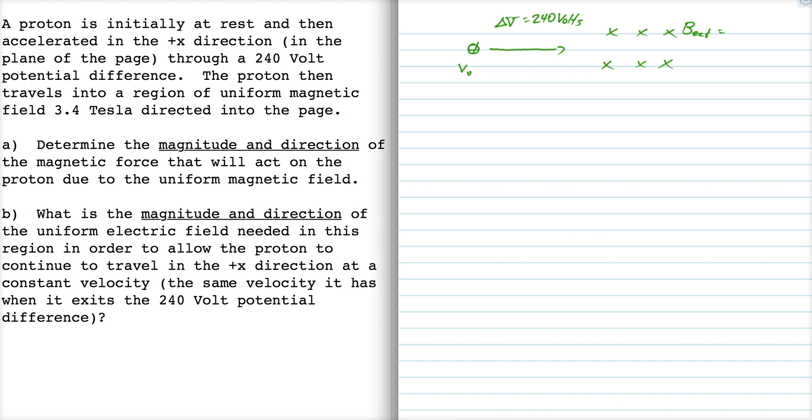The proton then travels into that field in a straight line. We need to find the magnitude and direction of the magnetic force that will act on the proton.